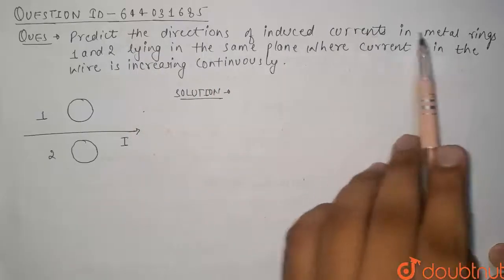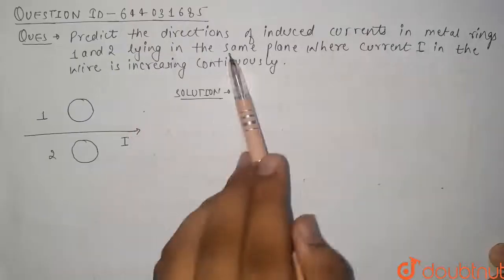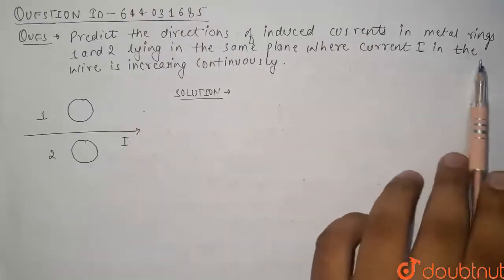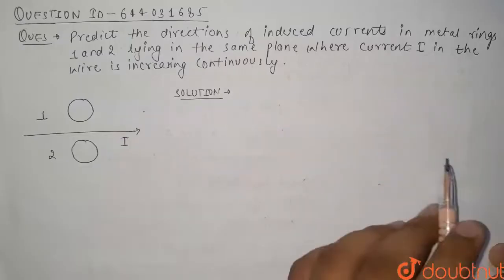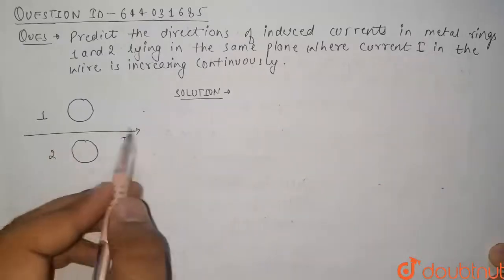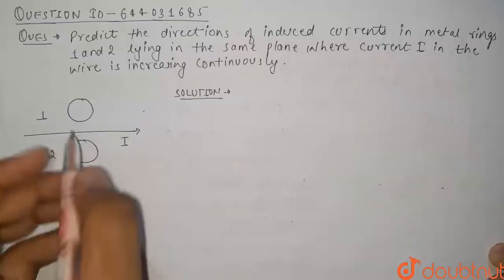Predict the direction of induced current in metal rings one and two lying in same plane where current I in the wire is increasing continuously. So guys, in this question, this is wire and current I is increasing continuously.